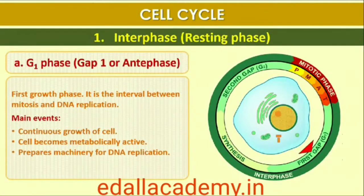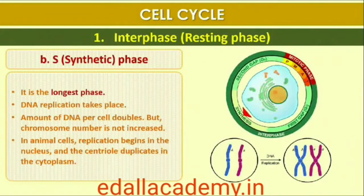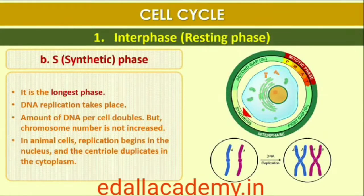G1 Phase corresponds to the interval between mitosis and initiation of DNA replication. During G1 Phase, the cell is metabolically active and continuously grows but does not replicate its DNA. The S (synthesis) phase marks the period during which DNA synthesis or replication takes place. During this time the amount of DNA per cell doubles — if the initial amount of DNA is denoted as 2C, then it increases to 4C. However, there is no increase in chromosome number; if the cell had diploid or 2N chromosomes at G1, even after S phase the number remains 2N.